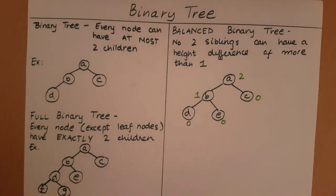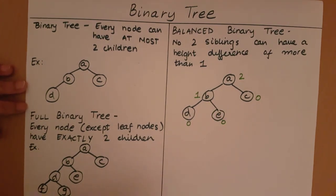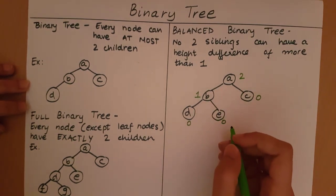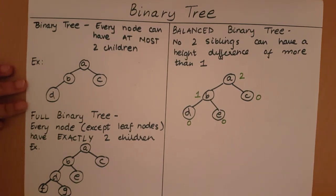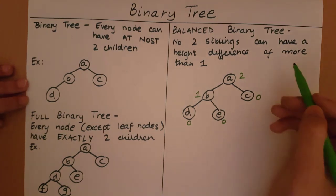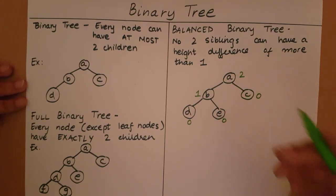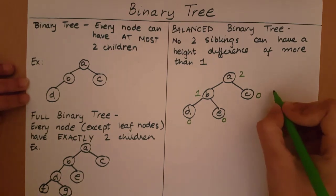Now we look at sibling nodes. D and E share the same parent, so they are siblings — their height difference is zero, which is not more than one. B and C have a height difference of one, which is still not more than one. At the next level, A is the root and has no siblings. So this tree is balanced at every level — it is a balanced binary tree.